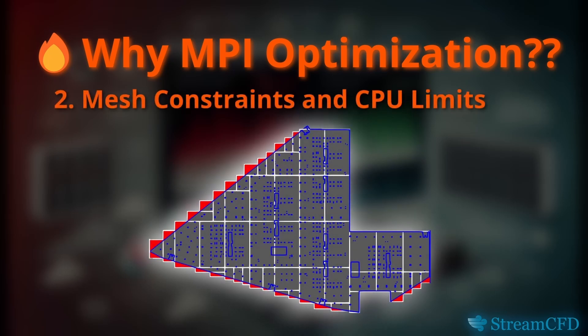Mesh constraints and CPU limits: although cells outside the domain cannot be completely avoided, we can reduce the mesh cell count outside the domain by using meshes with smaller bounds along the wall. Here, blue indicates the geometry, white lines indicate the mesh outline, and the red highlighted area is the unwanted cells. I have tried to minimize the number of cells outside the domain, but this way we end up having a lot of meshes. This example has 52 meshes, and this number can exceed the number of CPUs or logical processors on our machine.